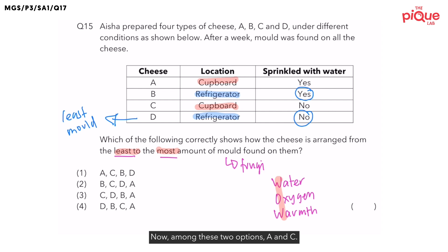Now among these two options, A and C, A is sprinkled with water. C is not sprinkled with water. And remember, water is an important condition before mold can grow. Am I right? So if I want the cheese to have the most mold, should the cheese be sprinkled with water? Yes. Hence, A would have the most mold. Let's write it down over here.